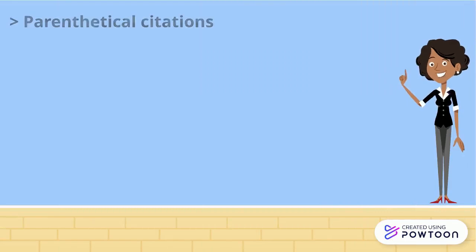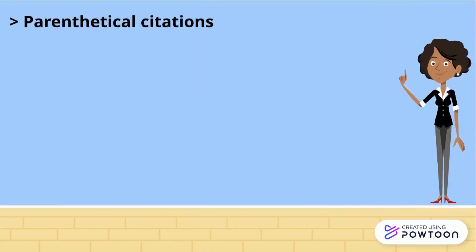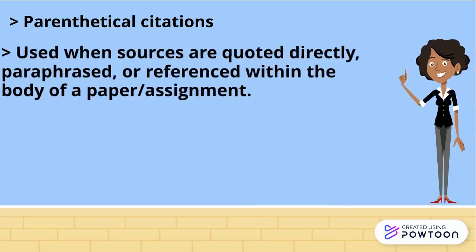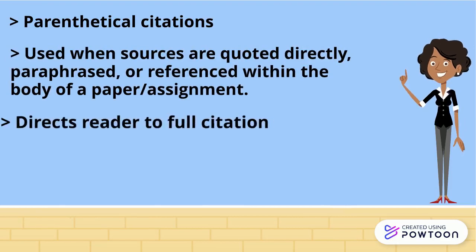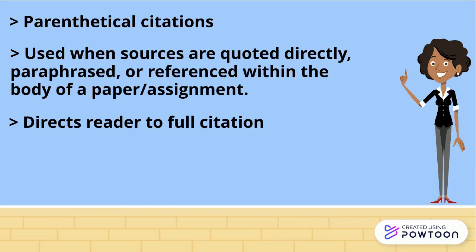In-text citations are parenthetical citations included within the body of your assignment when sources are quoted directly, paraphrased, or referenced. The parenthetical citation gives the reader some quick information and directs them to the full citation in the reference list.